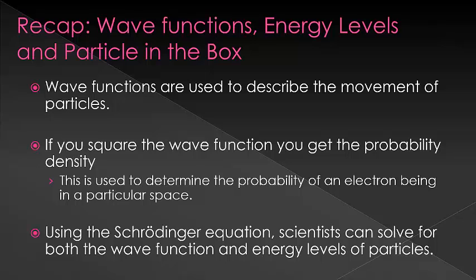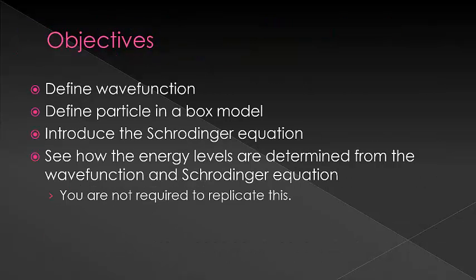We can now move on and see how this is done for the more complicated hydrogen atoms and the results that come from this. We have now defined a wave function, defined the particle in the box model, introduced the Schrödinger equation, and saw how the energy levels are determined from the wave function and the Schrödinger equation. This last one of which you are not required to replicate.